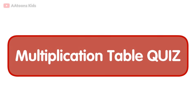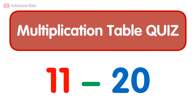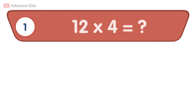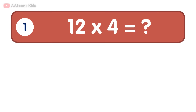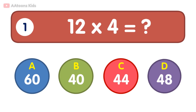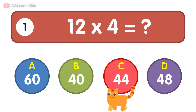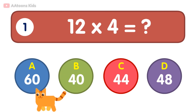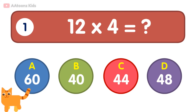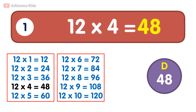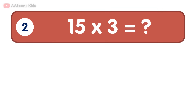Multiplication table quiz for kids 11 to 20. 12 times 4 is equal to 48. 12 times 4 is 48. 15 times 3 is equal to...